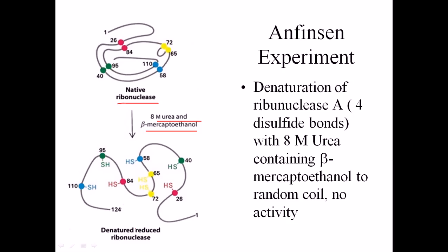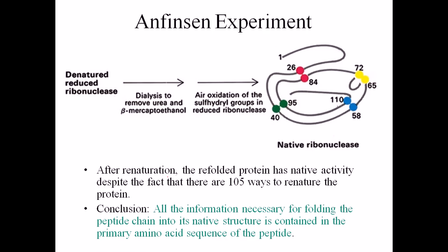This random coil shows no activity because it is not a folded protein. Protein folding is the most important thing for protein function — unless the protein is folded, it cannot function. So after denaturation, the protein structure is no longer active.